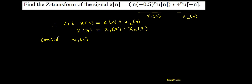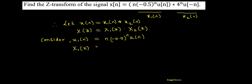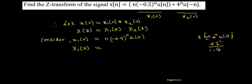Consider x1(n) = n·(-0.5)^n·u(n). Taking the Z-transform on both sides to get X1(z). Using the standard result: the Z-transform of n·α^n·u(n) is equal to α·z^(-1) divided by (1 - α·z^(-1))^2.